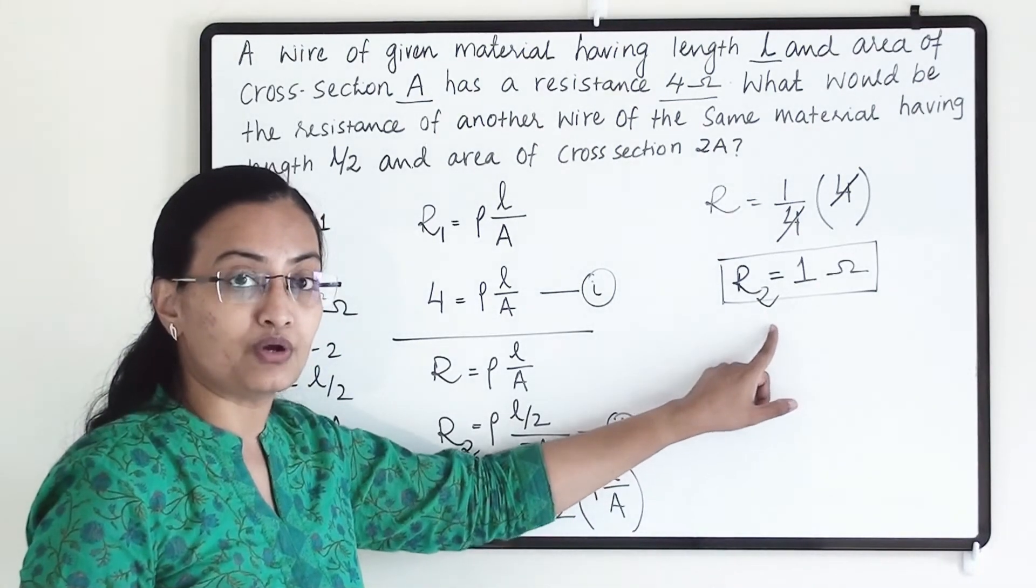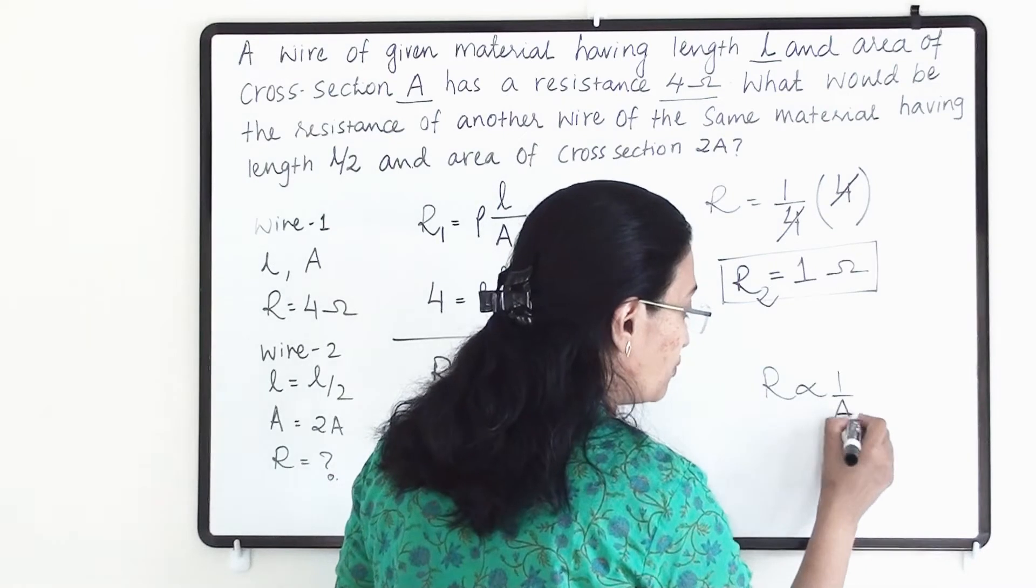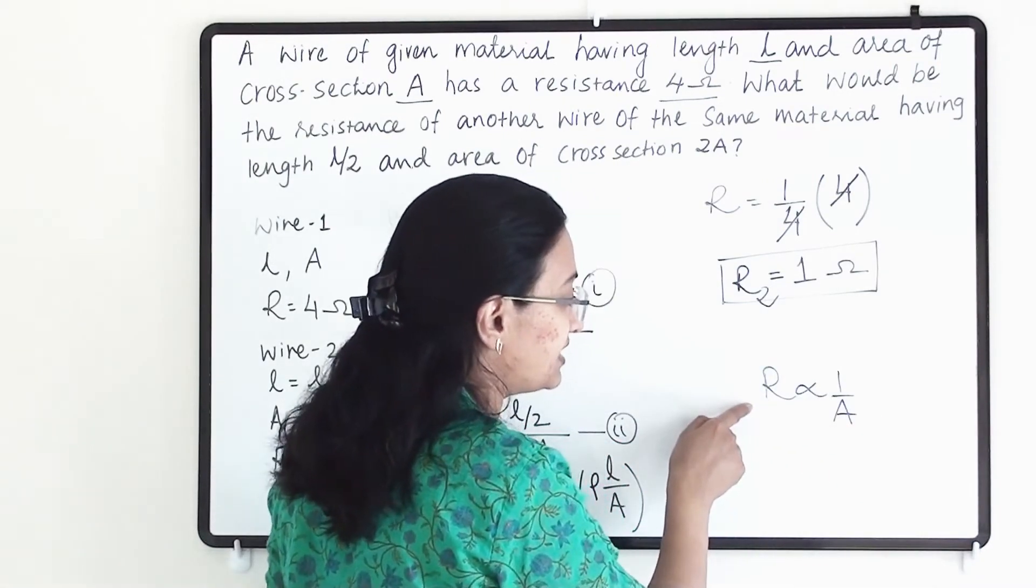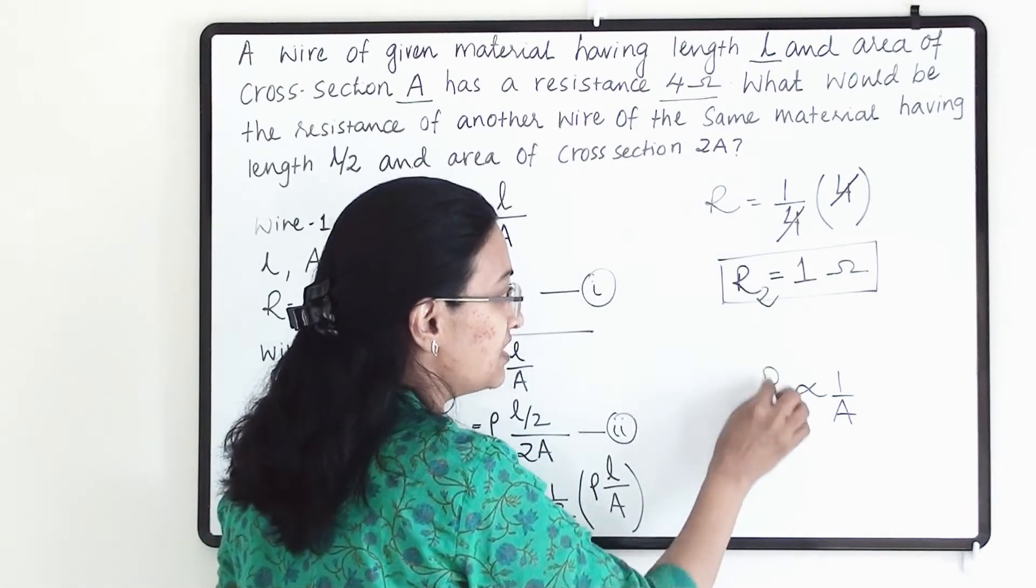And why that has happened? Because resistance is inversely proportional to area. So one will increase, other one will decrease. So here we have increased the area, we have made it double. So that's why resistance has been reduced.